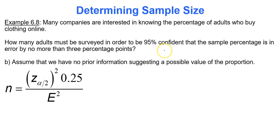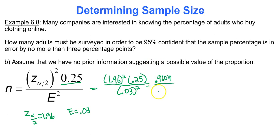Now let's assume we have no prior information suggesting a possible value of the proportion. So we have to use the formula where p-hat times q-hat is replaced with 0.25. It's still the same confidence level, so it's still the same critical value of 1.96, and it's still the same error of no more than 3%. So even though we have less information here, the formula is actually a little bit easier, which is pretty awesome. So the critical value squared times 0.25 over 0.03 squared. You perform this calculation. You get 0.9604 divided by 0.0009, and you're going to get 1067.1.